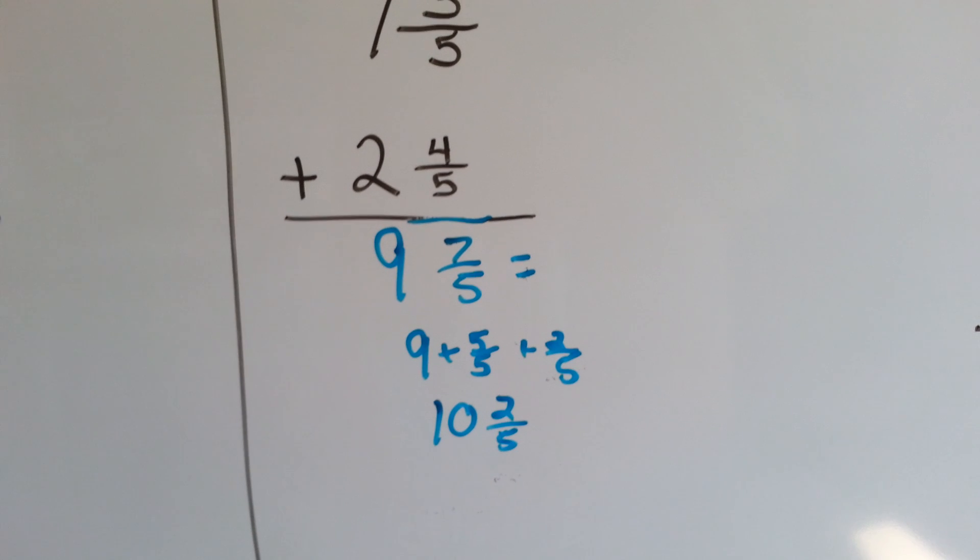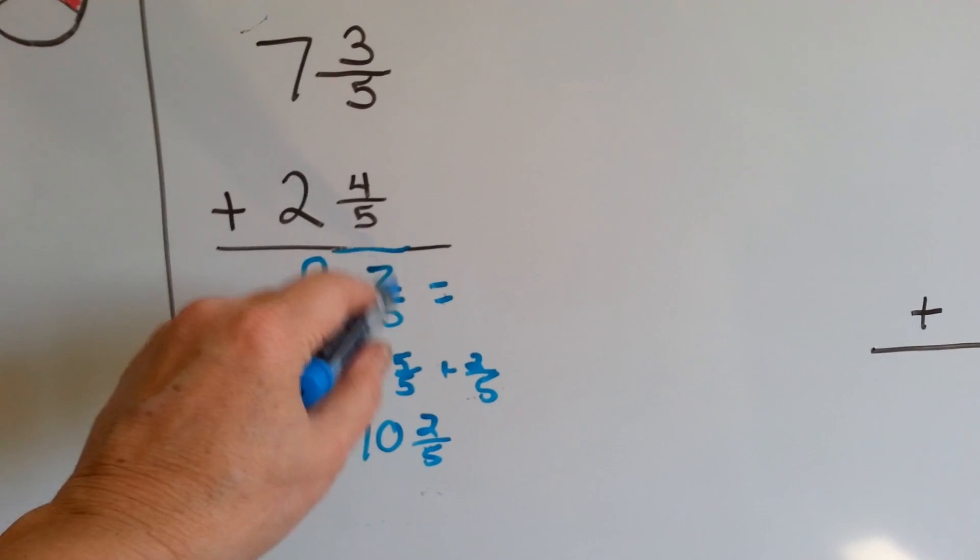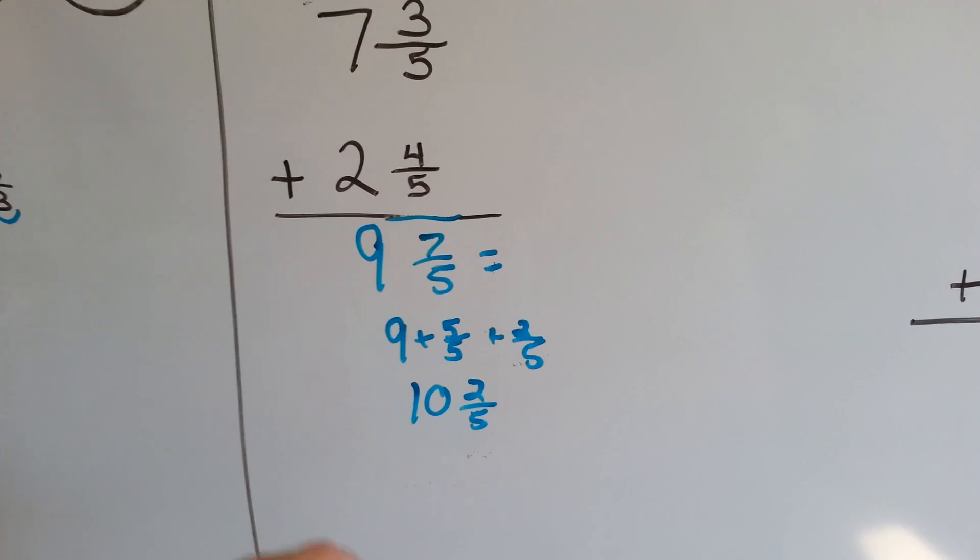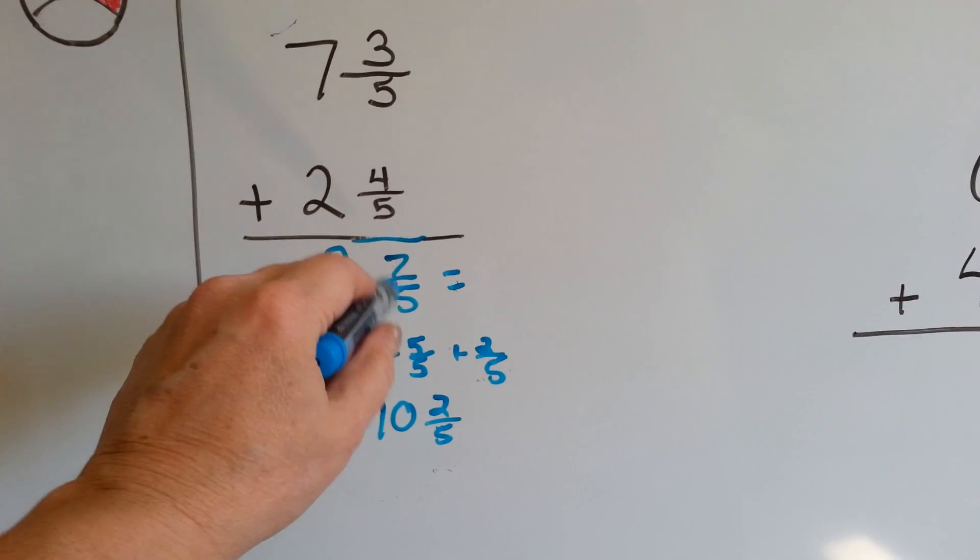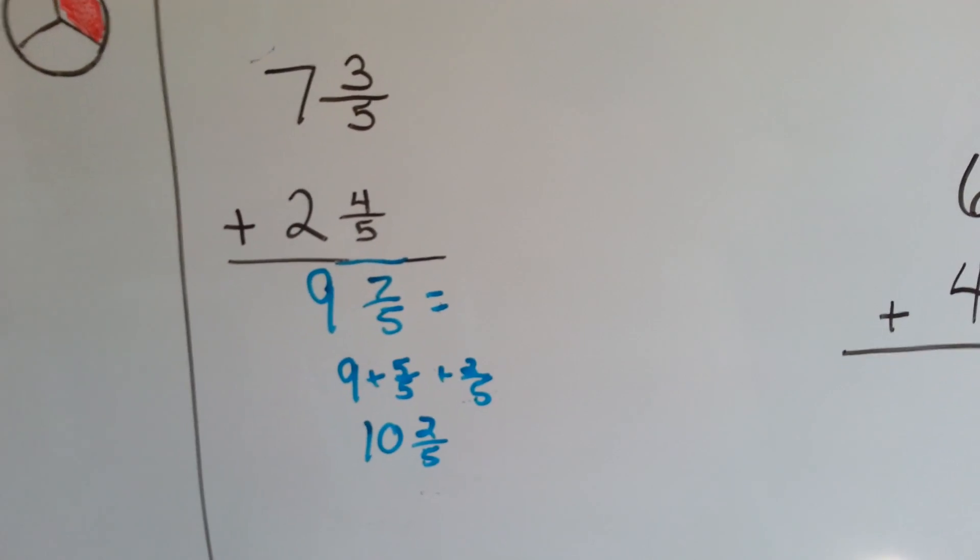If it's easier for you to break it up right away and carry it over, then go ahead and do that. What's important is you get the right answer, and that you understand that this contains a whole one. There's a 5/5 hiding in there.